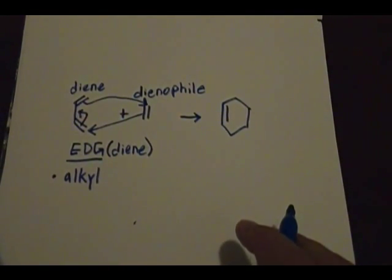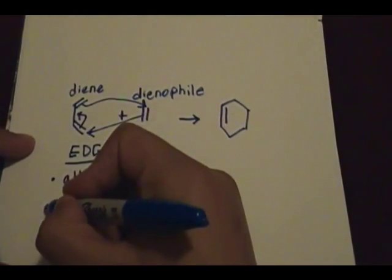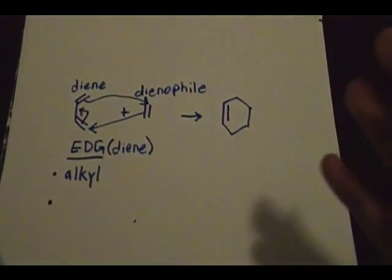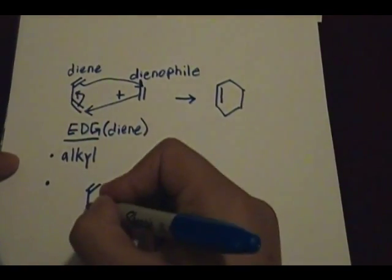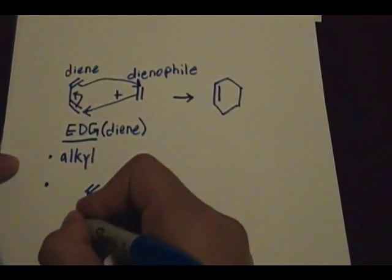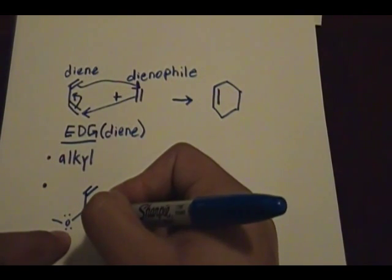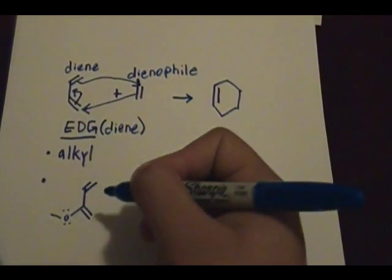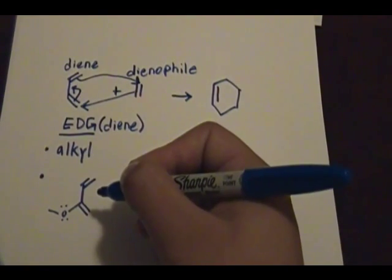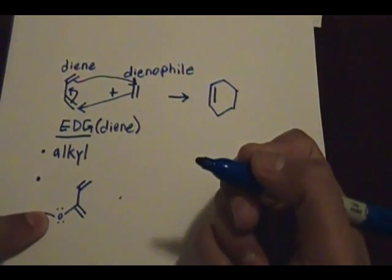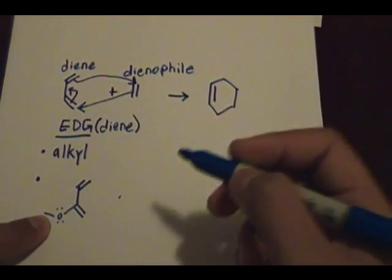That's what you find on the diene. There's another group you also usually find on the diene — let me explain it with a picture. If this is your diene and you have a substituent where the atom directly connected to any carbon of the diene, directly attached to the conjugated system, has lone pairs on it — that is also an electron donating group, and it donates its electrons by resonance.